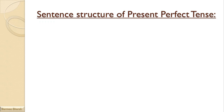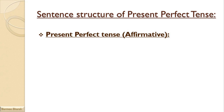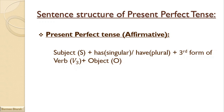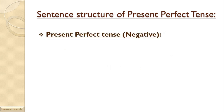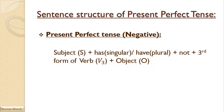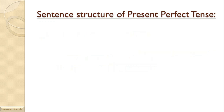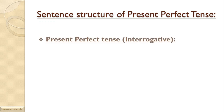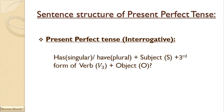The sentence structure of present perfect tense affirmative is: Subject + has/have (has with singular, have with plural) + third form of verb + object. For example, 'I have eaten food.' For the negative: Subject + has/have + not + third form of verb + object. For example, 'I have not eaten food.' For the interrogative: Has/Have (has with singular, have with plural) + subject + third form of verb + object + question mark. For example, 'Have I eaten food?'